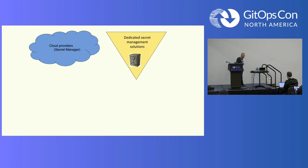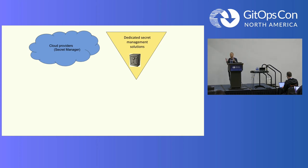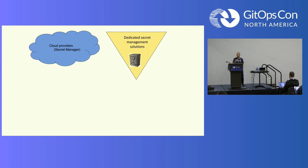In order to achieve that, we need to understand that secrets need to live in a dedicated secret solution. This is why there are so many secret solutions out there. All the cloud providers have different secret management solutions and key management systems to store and handle secrets. And there are also dedicated secret management solutions like HashiCorp Vault, Conjur, Akeyless, and more — so there are a lot of tools and solutions to choose from.